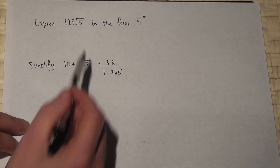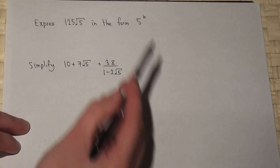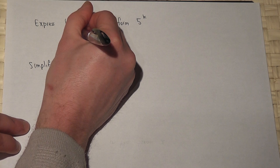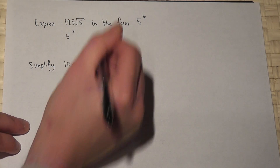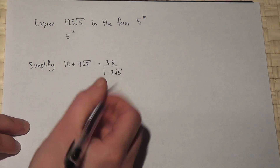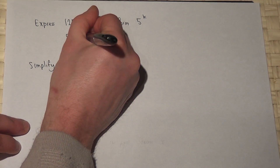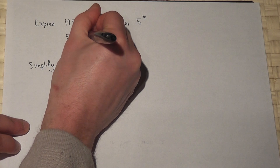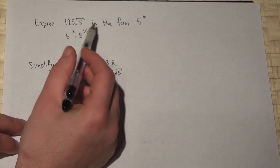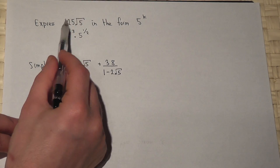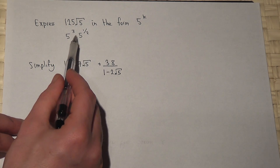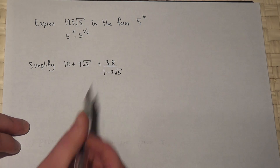We know that 125 is the same as 5 to the power of 3. And the square root of 5 is the same as 5 to the power of one half. So therefore this is equivalent to 5 cubed times 5 to the power of one half.